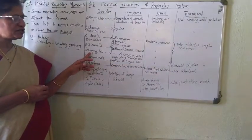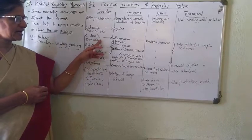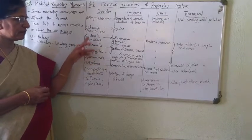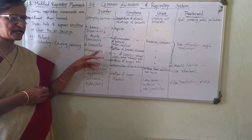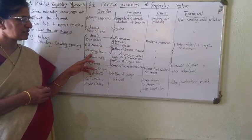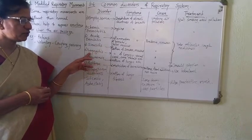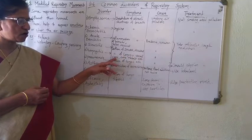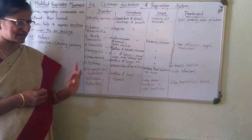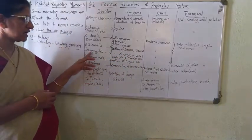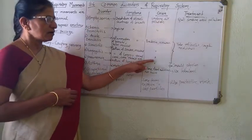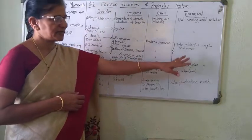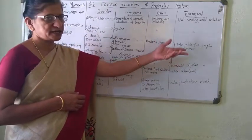Next is laryngitis. Remember, the suffix '-itis' means inflammation — so bronchitis, sinusitis, and laryngitis all refer to inflammation of their respective structures. Laryngitis is inflammation of the larynx, with symptoms including affected vocal cords and sore throat. The cause is bacterial or viral infection, and the treatment is to take antibiotics and cough medicines.